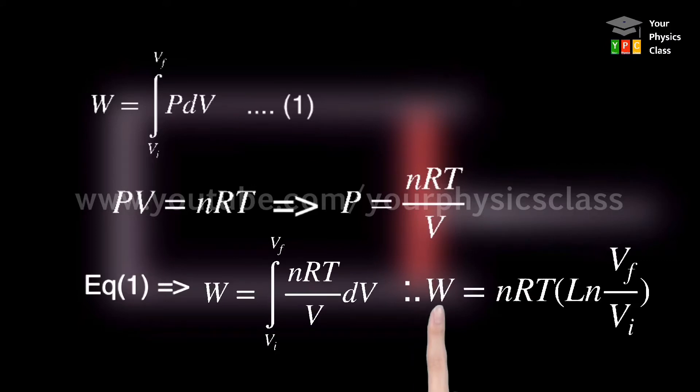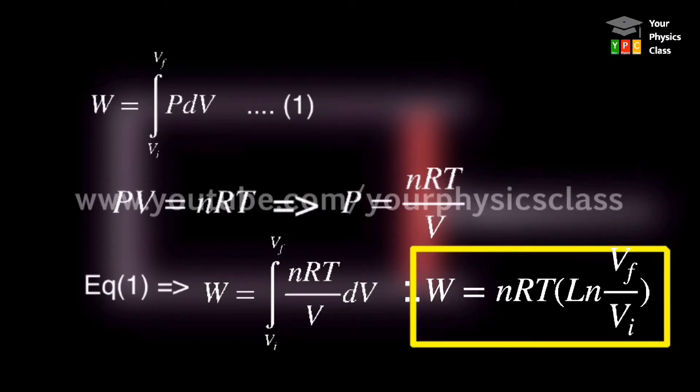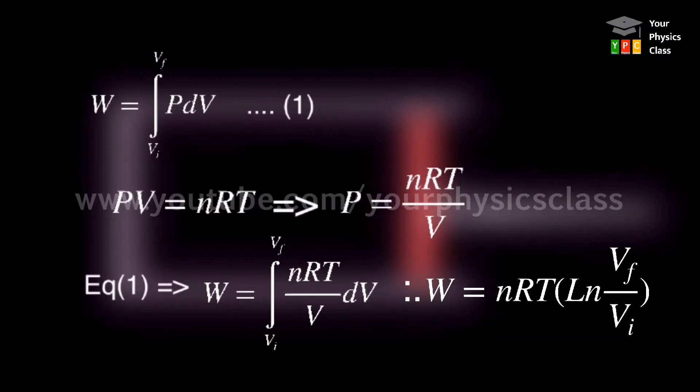Therefore, W equals nRT times natural log of Vf upon Vi. So you have to remember this tip. Those who don't have mathematics, the mathematics details involving this step are not mentioned, so direct result is expected here. And it is good for the zoology and fishery students—that means students who have not taken mathematics at 12th standard—for them this step will be easy to remember.